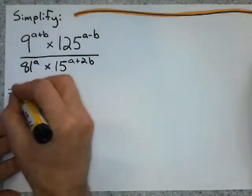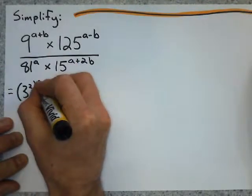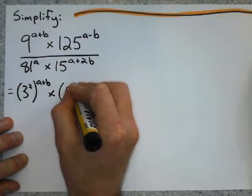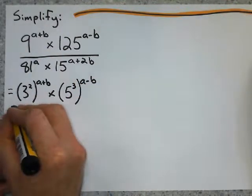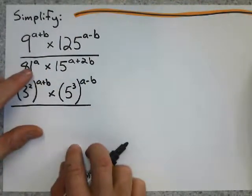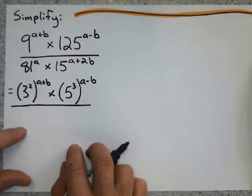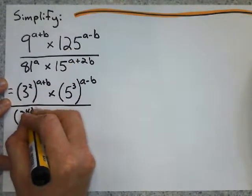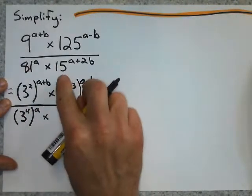And I just started working this out. And I went, well, what if I write 9 as 3 squared, a plus b. And I'll write 125 as 5 cubed, a minus b. And, okay, so, yep, I know 81 is 9 squared, but if I already have this 3, it makes life a lot easier with power rules if I have the same base. So I'm sure we all know that 81 is 3 to the power of 4.